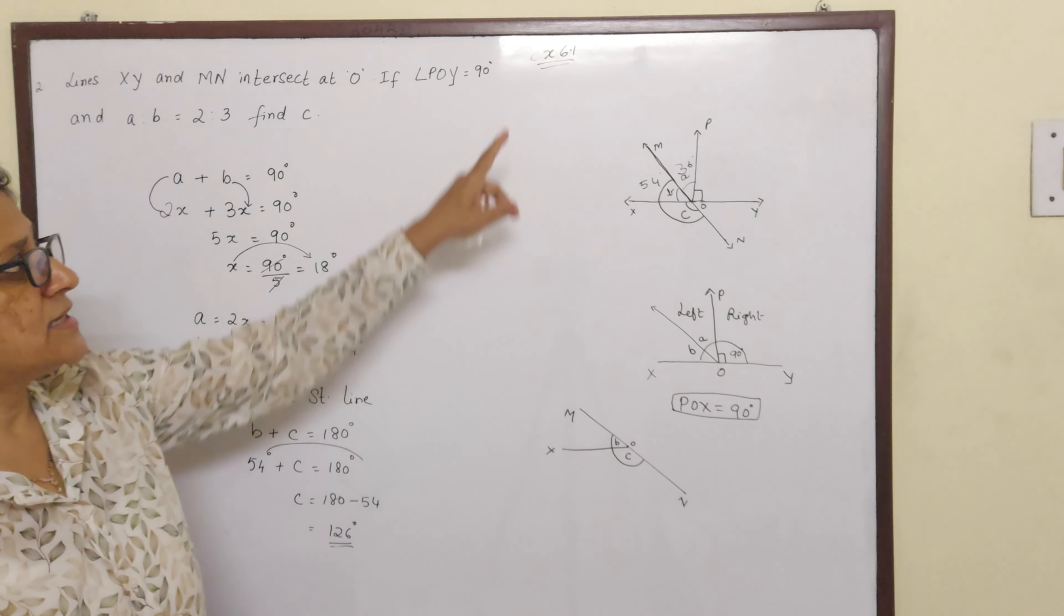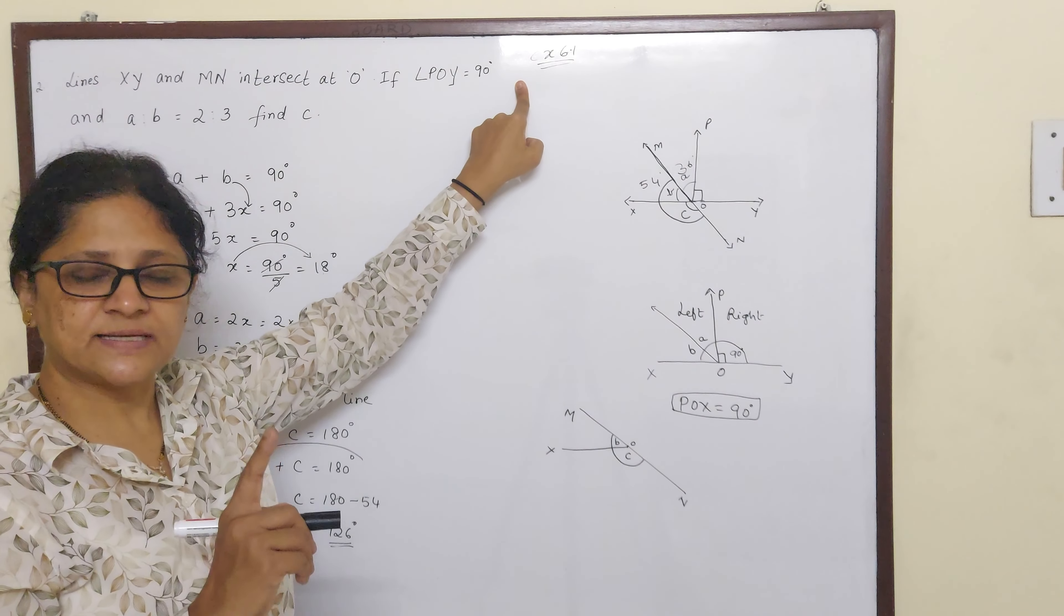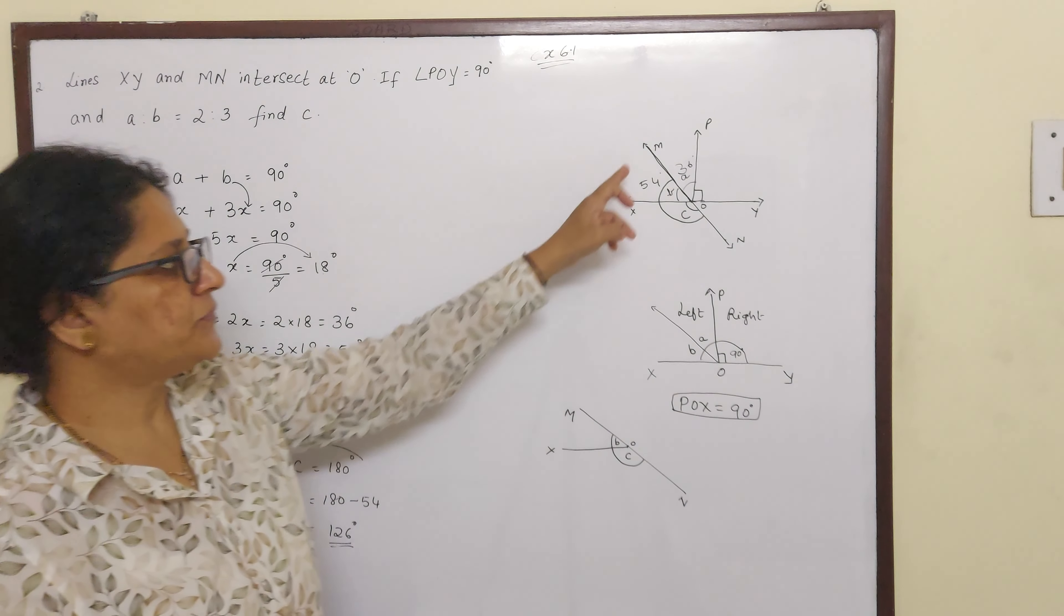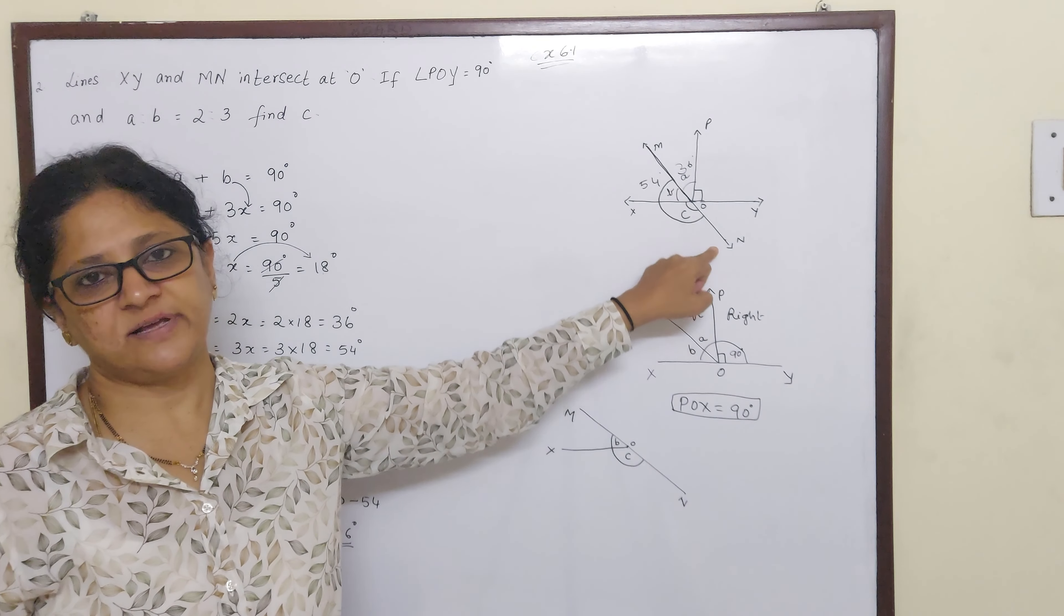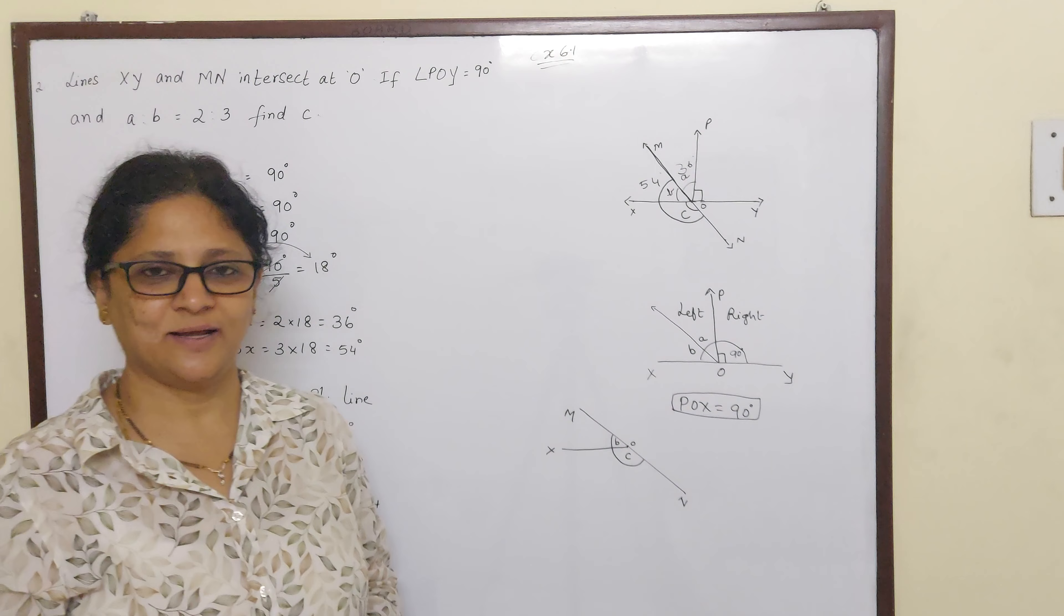So in exercise 6.1, first sum and second sum, you should remember that the degree formed in a straight line will always be 180 degrees. Okay? Bye children.